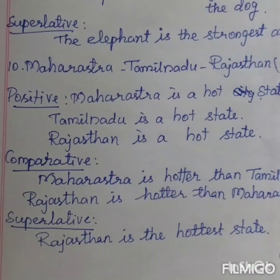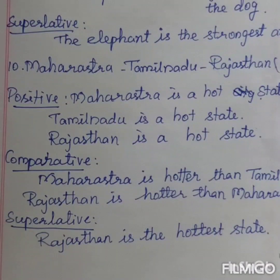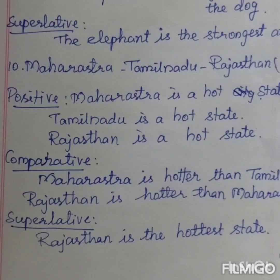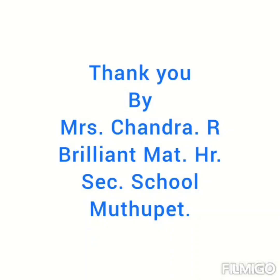Next: Maharashtra, Tamil Nadu, Rajasthan — adjective is 'hot'. Note: 'hot' follows the consonant-vowel-consonant pattern, so we double the last letter t: hot → hotter → hottest. For positive degree: Maharashtra is a hot state, Tamil Nadu is a hot state, Rajasthan is a hot state. For comparative degree: Maharashtra is hotter than Tamil Nadu; Rajasthan is hotter than Maharashtra. For superlative degree, only one sentence: Rajasthan is the hottest state. Thank you.